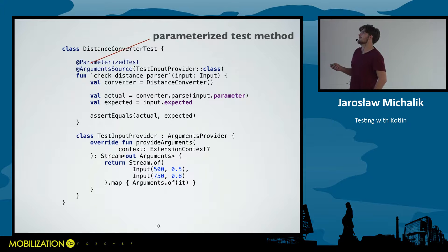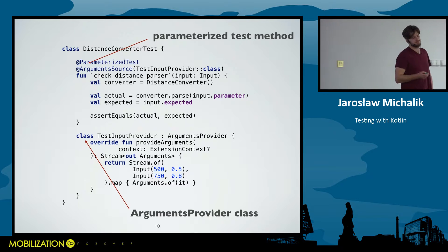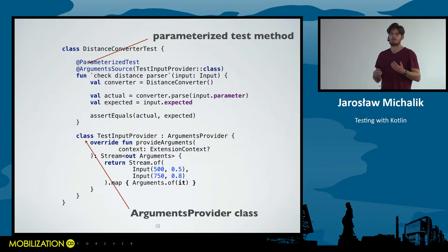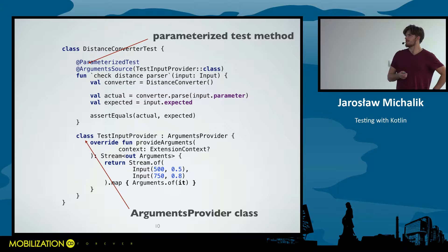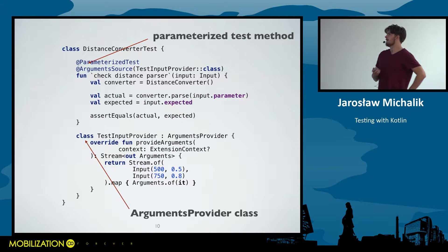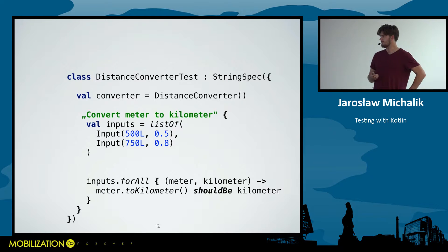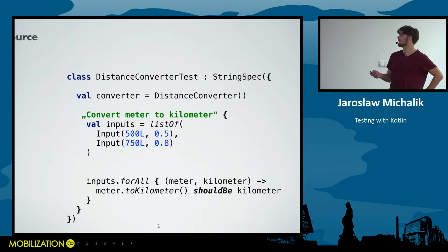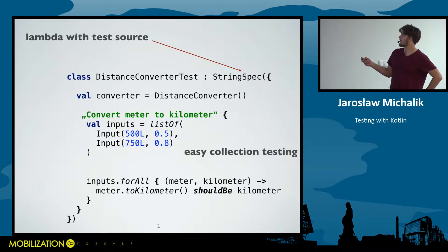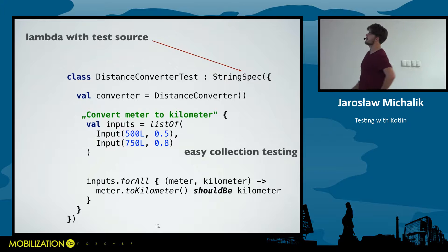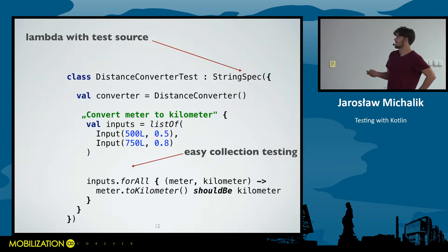But we don't want to write our code like that. I personally dislike annotations and I'd like to create parameterized tests with something like a for loop. So we have a framework called Kotlin Test, and there is something called Specification. We extend that class and write a large lambda where our test lives. As the framework designers promised, there should be easy collection testing. So let's try this out.